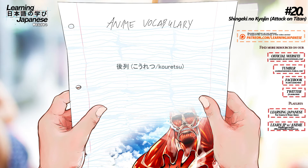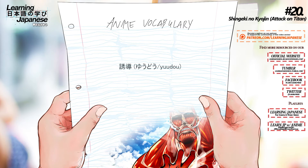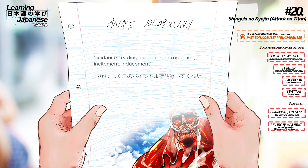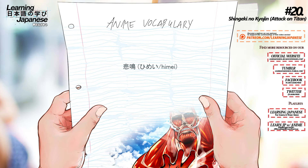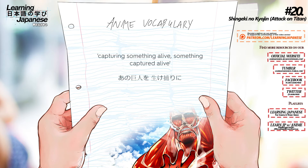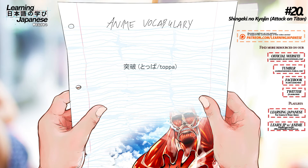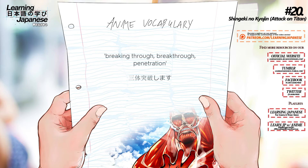断末魔 (danmatuma) — Death agony. 後列 (kouretsu) — Rear, back row. 誘導 (yudou) — Guidance, leading, induction, introduction, incitement, inducement. 悲鳴 (hime) — Shriek, scream. 生け捕り (ikedori) — Capturing something alive. 突破 (toppa) — Breaking through, breakthrough, penetration.